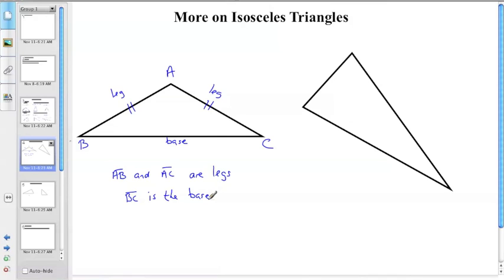Now these two angles that are at the base of the isosceles triangle, so angle B and angle C, are called base angles. And then angle A is the vertex angle. And the vertex angle is the one that's included by the legs.